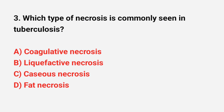Question number 3: Which type of necrosis is commonly seen in tuberculosis? The right answer is option C: Caseous necrosis.